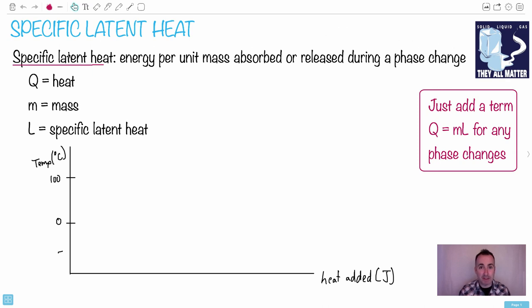Here's the formal definition: specific latent heat is the energy per unit mass absorbed or released during a phase change. We have an equation for it, and I'm going to write it down here. That's going to be really important. We have Q equals ML.